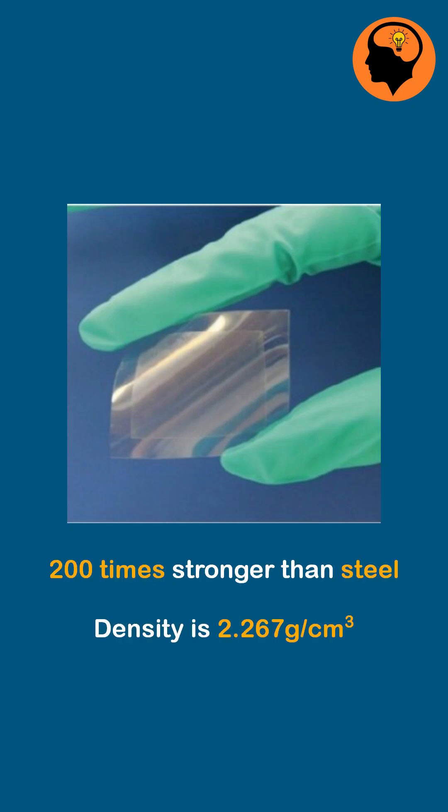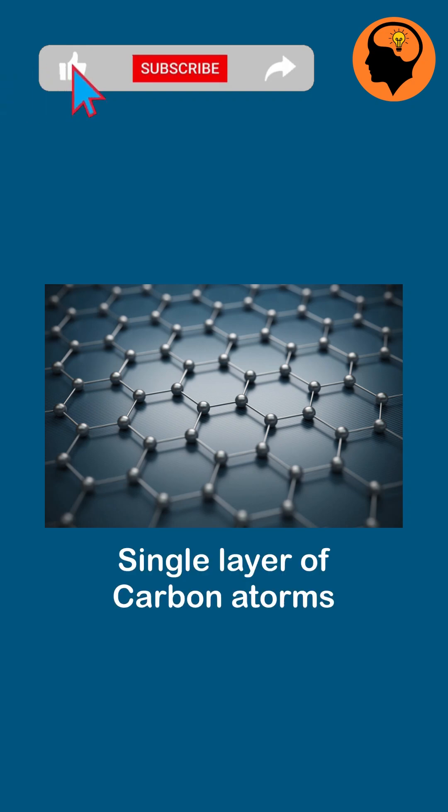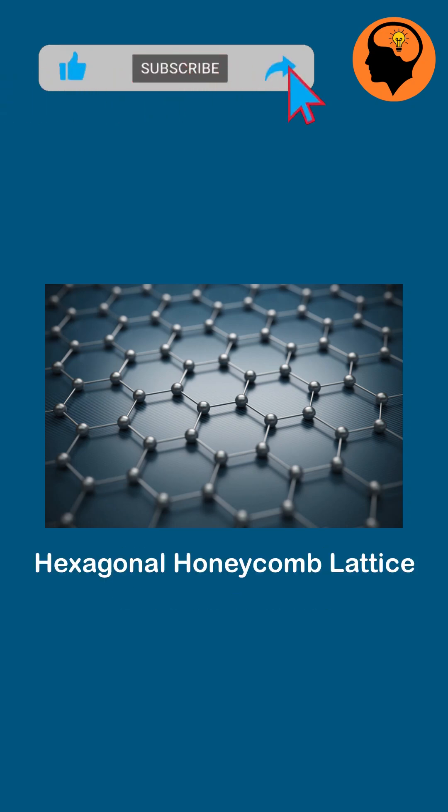Graphene is one of the strongest and lightest materials in the world. Graphene is composed of a single layer of carbon atoms arranged in a hexagonal honeycomb lattice.